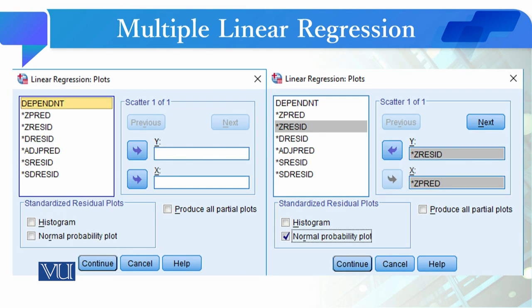Aap jo hai plots mein se jo hai aapka by default jo open hoga dialogue box, to ismein aapne kya karna hai ki aapne ZPRED ko le aana hai X pe aur ZRESID ko le aana hai Y pe.